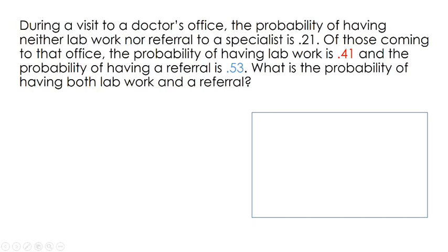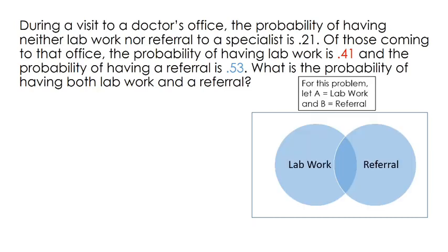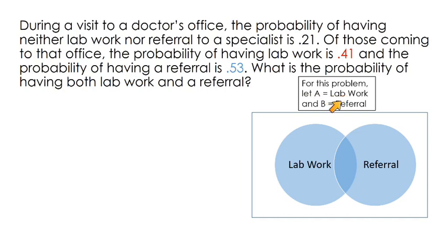Let's do another problem. It says: during a visit to a doctor's office, the probability of having neither lab work nor referral to a specialist is 21%. Of those coming to that office, the probability of having lab work is 41%, and the probability of having a referral is 53%. What's the probability of having both? Let A refer to getting lab work done and B refer to getting the referral done.